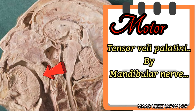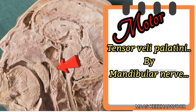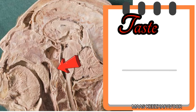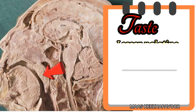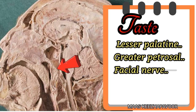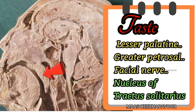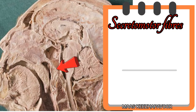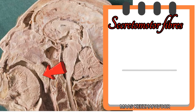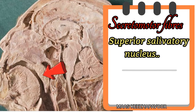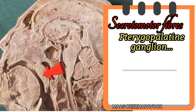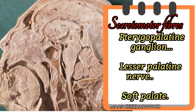The tensor veli palatini is supplied by mandibular nerve. The taste fibers from oral surface of soft palate travel through lesser palatine, greater pterygopalatine nerve, facial nerve and reach nucleus of tractus solitarius. The secretomotor fibers for mucus glands in the nasal surface of soft palate start from superior salivatory nucleus, pass through greater pterygopalatine nerve, pterygopalatine ganglia, lesser palatine nerve and reach the soft palate.